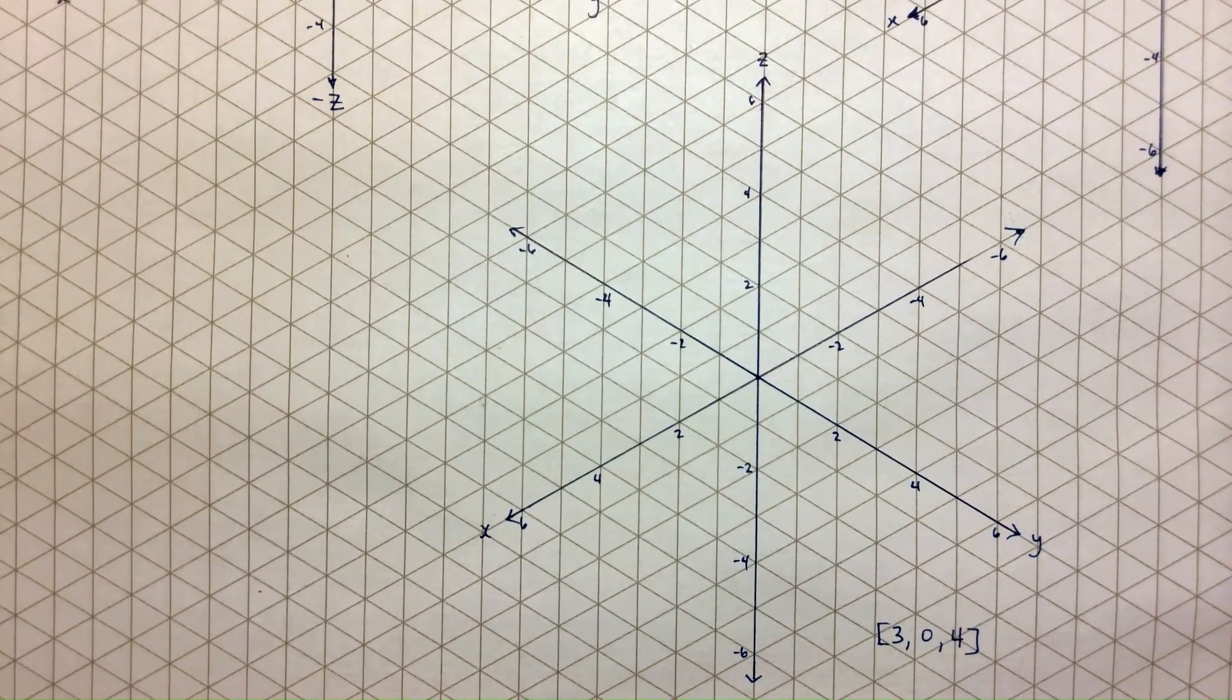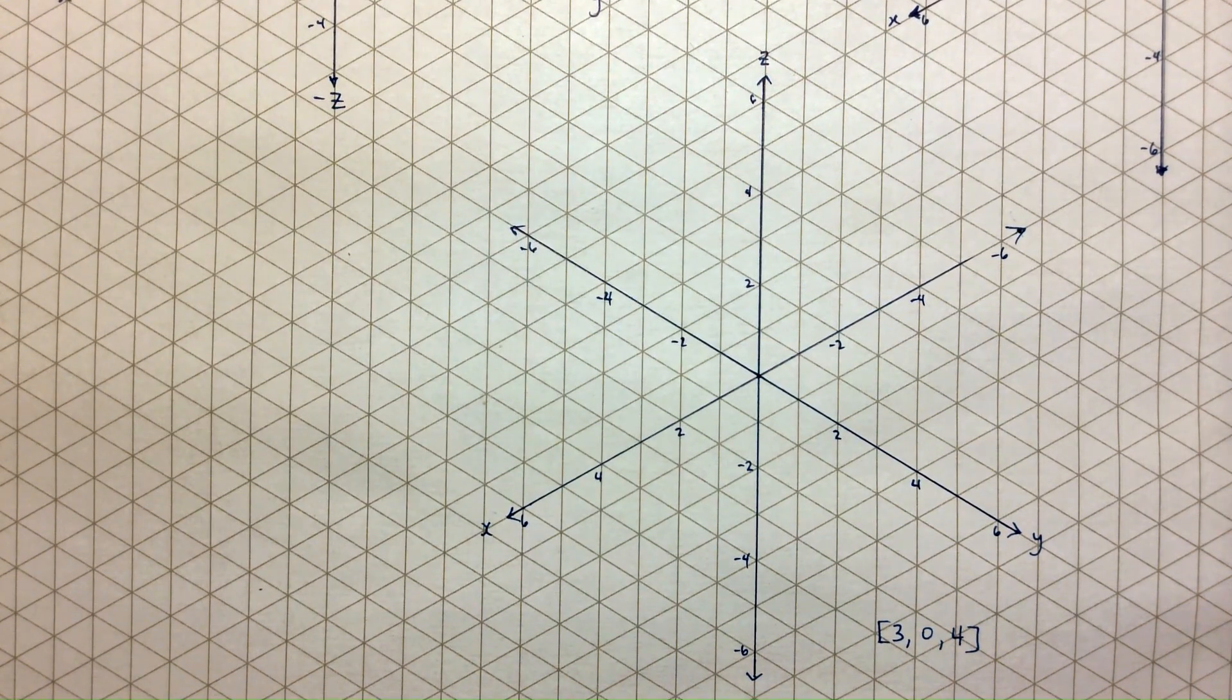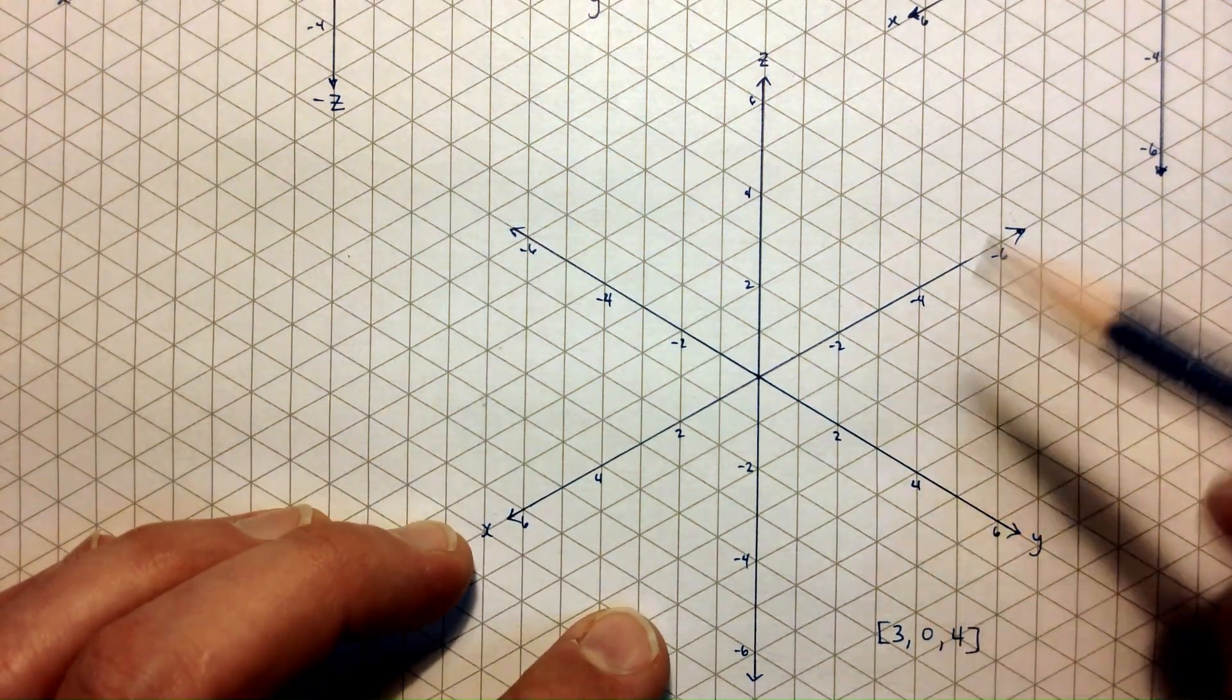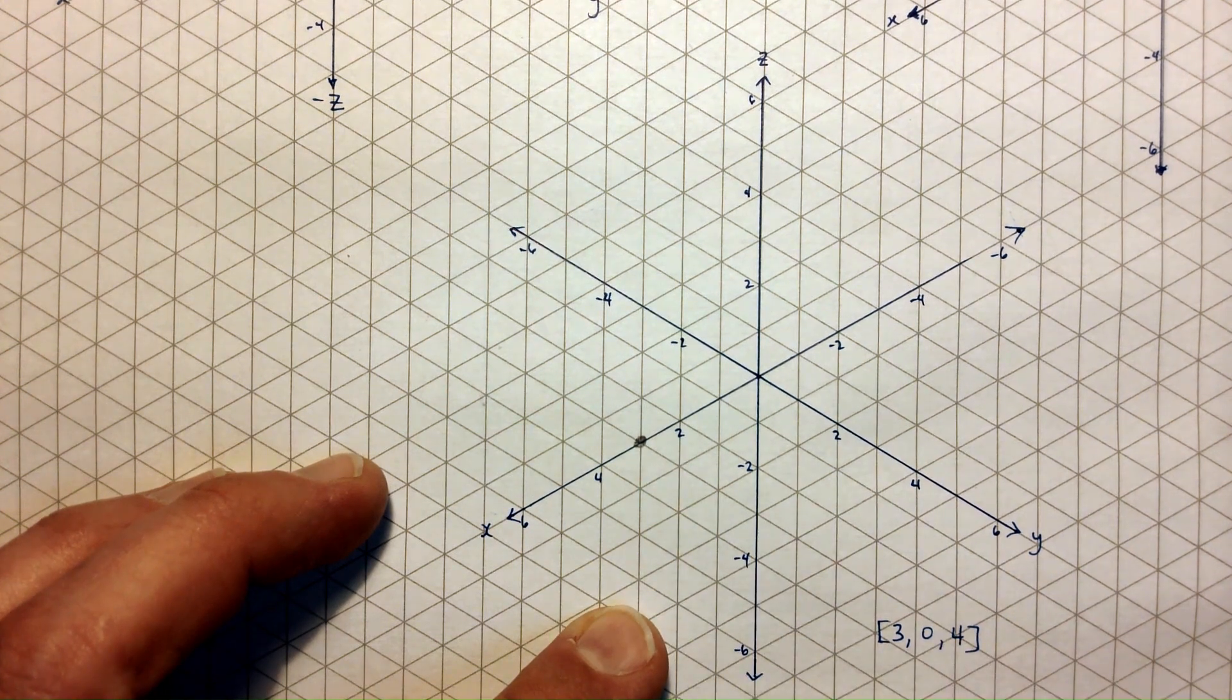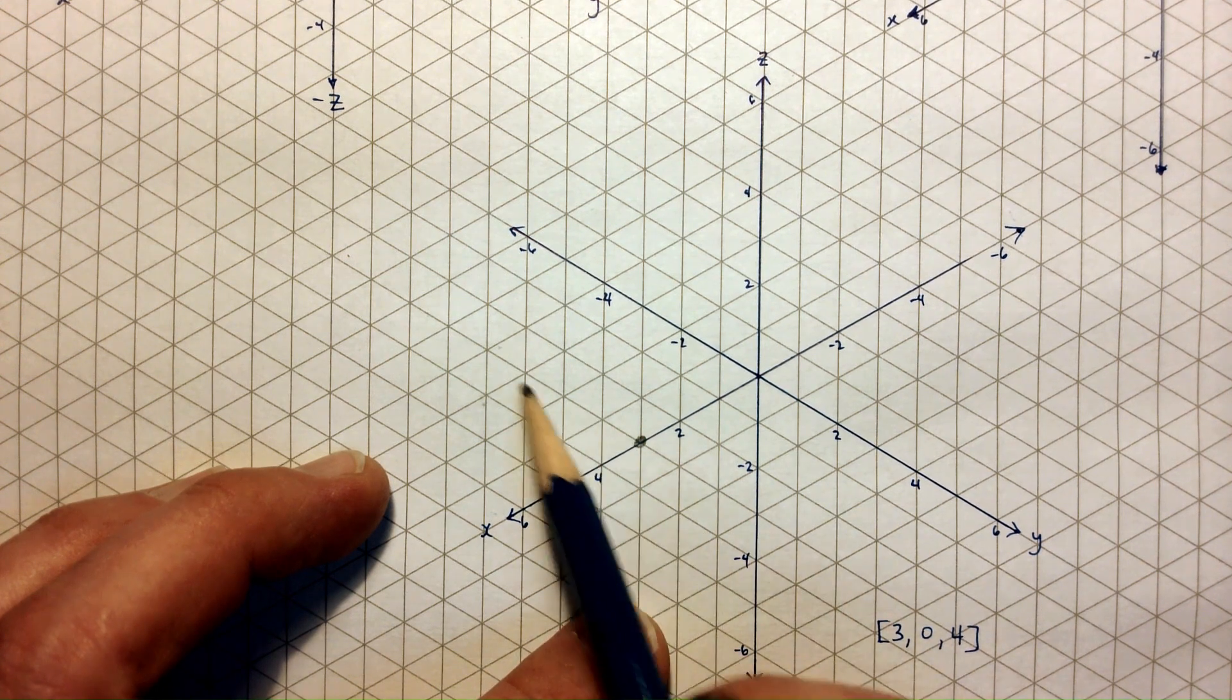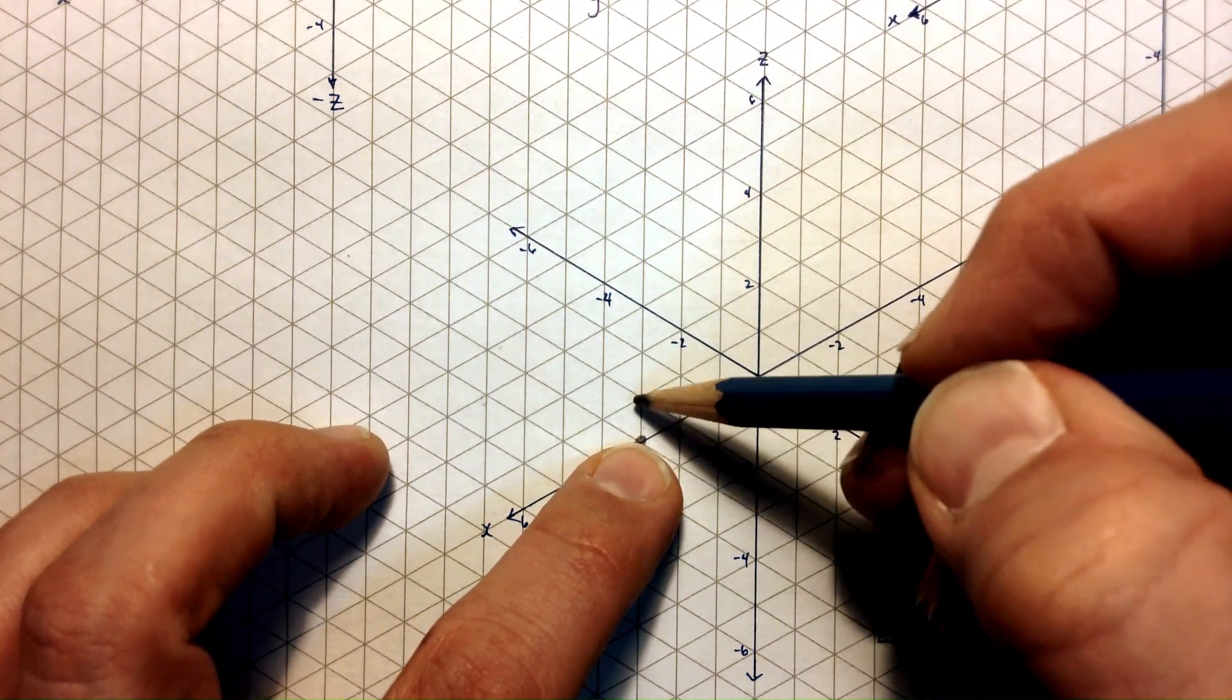Let's do one more. This one is (3, 0, 4). And we have a 0 here and that's something we haven't seen yet. So let's start. We're going to go out here to the 3 on the x-axis, positive x. Then 0 for y. That means we're not moving out this direction or back this way along the y-axis. And finally, 4 for the z. That's up 4. 1, 2, 3, 4.